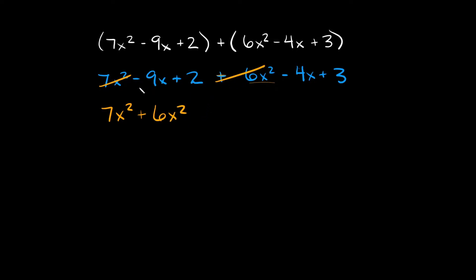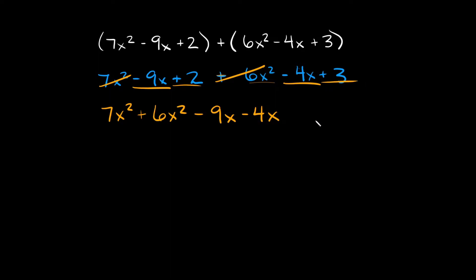Next I have negative 9x. What matches up with negative 9x? It would be this negative 4x. So let's bring that down next. And then lastly we just have the numbers — we have this plus 2 and this plus 3, so plus 2 plus 3.